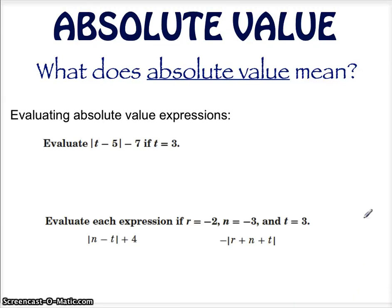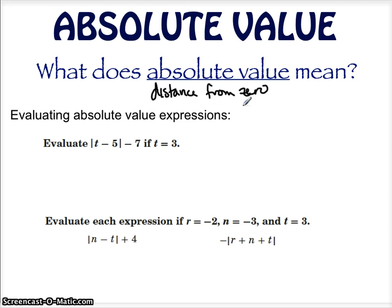Absolute value — what does that mean? Absolute value is a distance, basically a distance from zero. What you want to think about is that a distance is always positive. So you want to remember the absolute value is always positive, because it is a distance.